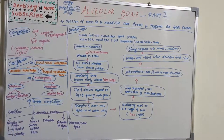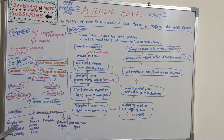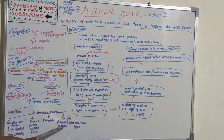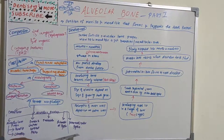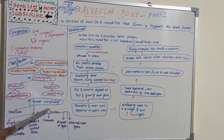Based on gross morphology, there are two types: basal bone and alveolar process. The alveolar process is further classified into alveolar bone proper, inner and outer cortical plates, trabecular bone, interdental septum, and interradicular septum. Alveolar bone proper is again divided into bundle bone and lamellar bone. Compact bone is very densely packed, cancellous is not as densely packed, and woven is immature bone.